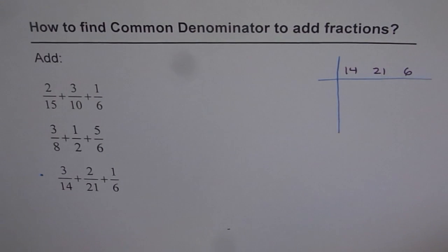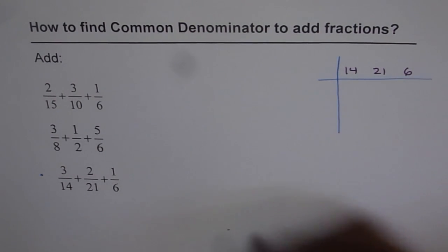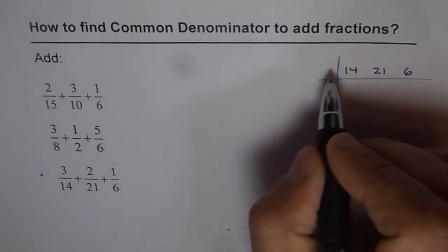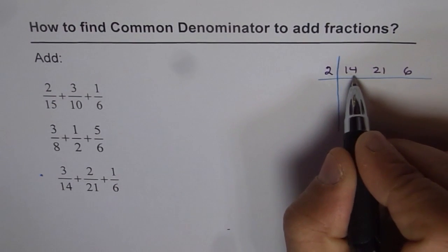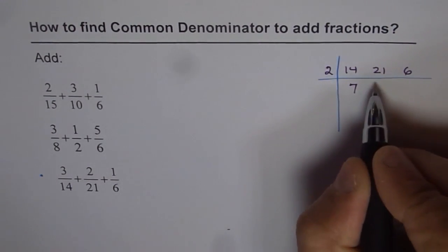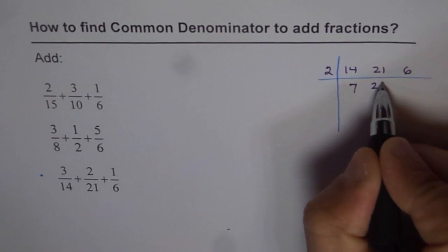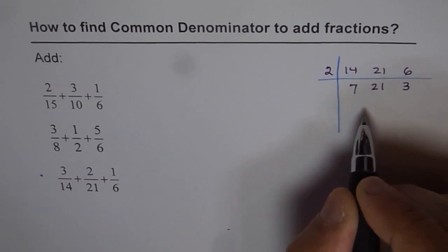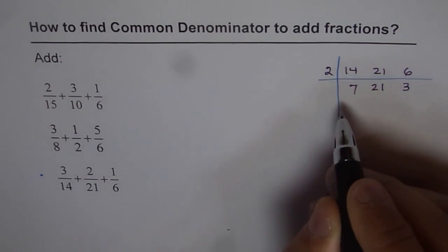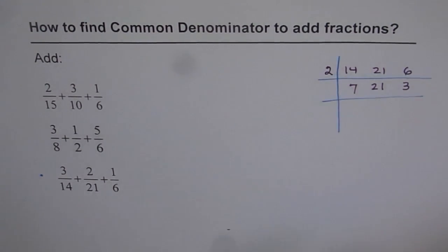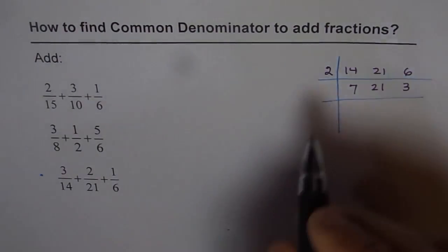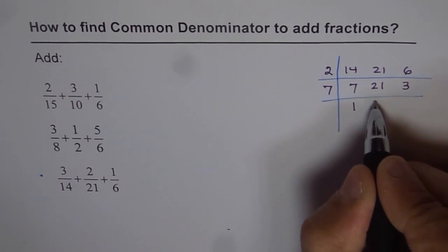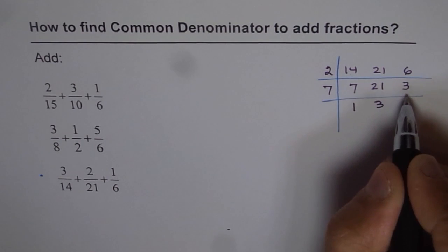Let's see which numbers can divide them. 14 and 6 are even numbers, so let's divide them by 2. If we divide 14 by 2 we get 7, but we can't divide 21, so just write 21 as such. 6 divided by 2 gives 3. Now 7 and 21 can both be divided by 7 — 7 times 1 is 7 and 7 times 3 is 21, but 3 cannot be divided by 7.